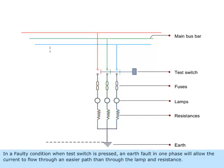In a faulty condition, when the test switch is pressed, an earth fault in one phase will allow the current to flow through an easier path than through the lamp and resistance.